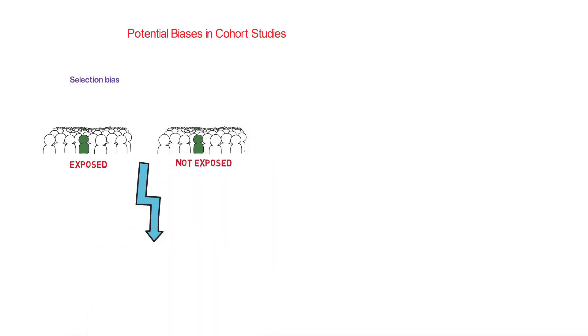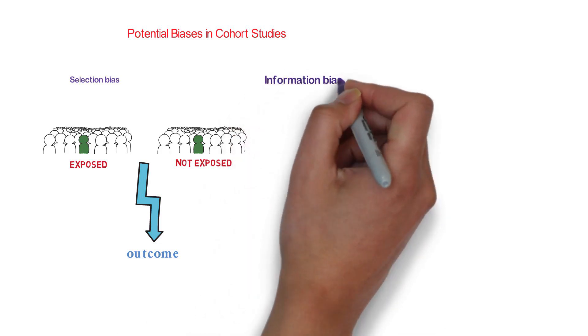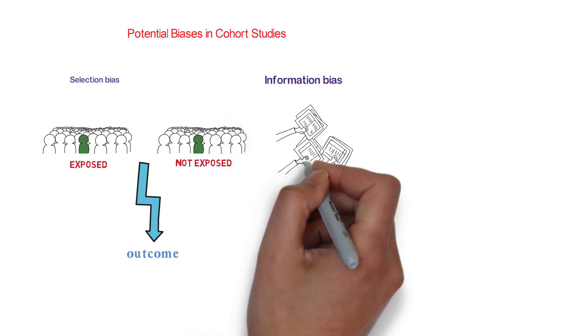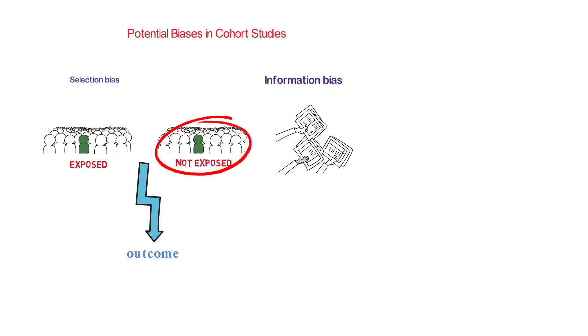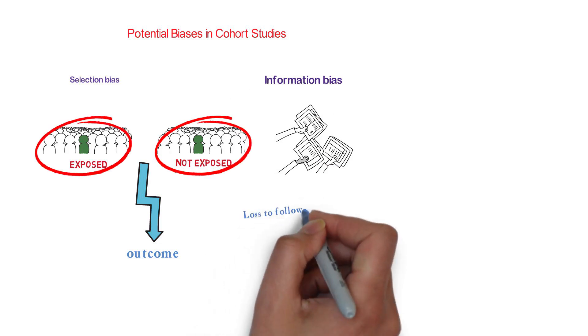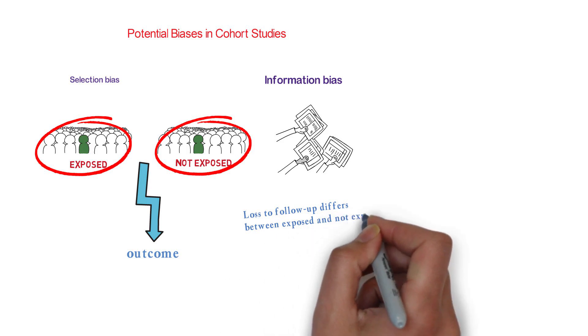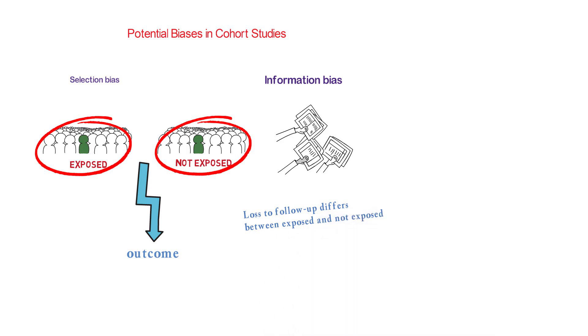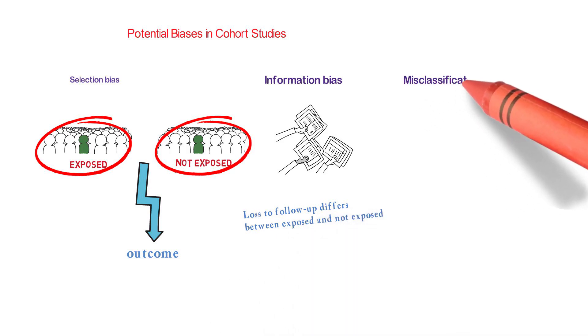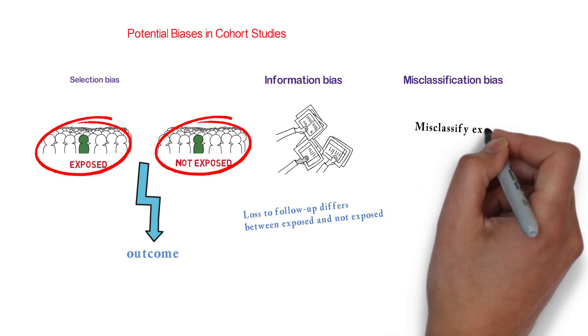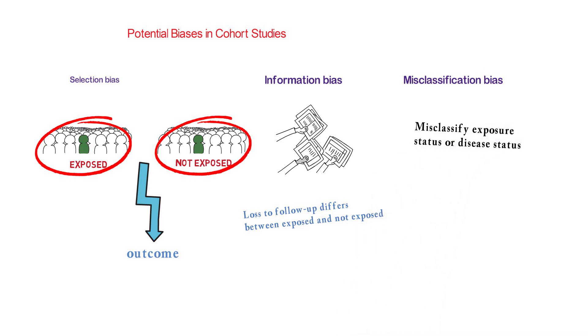Potential biases in cohort studies: selection bias — selecting participants into exposed and not-exposed groups based on some characteristics that may affect the outcome. Information bias — collecting different quality and extent of information from exposed and not-exposed groups. Loss to follow-up differs between exposed and not-exposed. Misclassification bias — misclassifying exposure status or disease status.